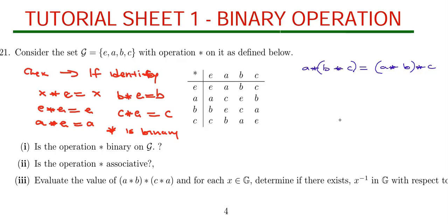So what we are going to do is evaluate both sides. First, what is b star c? We move b up to where c is — they are meeting at a. So b star c = a. Now what about a star b? Moving a up to b, we are meeting at e. So a star b = e. Then what is a star a? Starting at a up to a, we see that we are meeting at c.